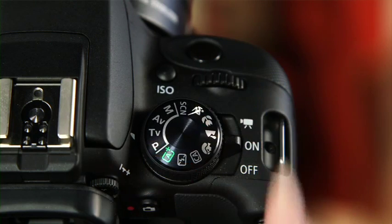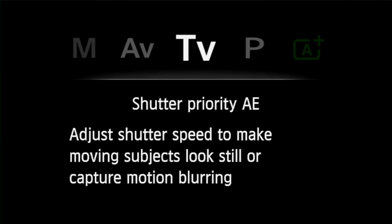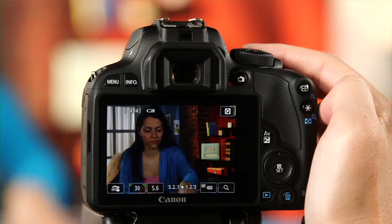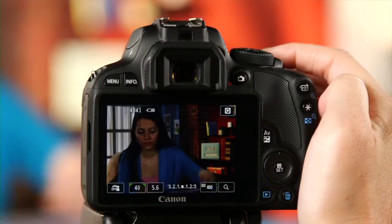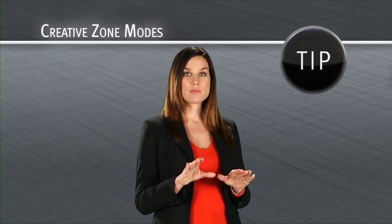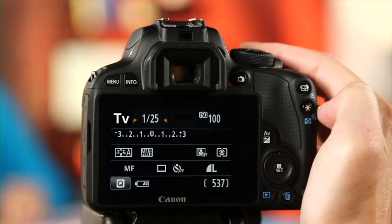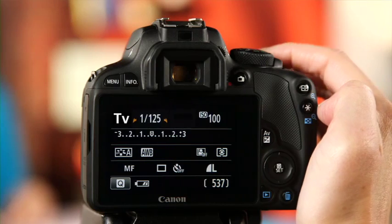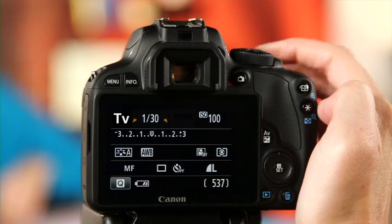The TV setting, or shutter priority AE mode, allows you to easily freeze action or create motion blur. Turn the dial to the right for a fast shutter speed or to the left for a slow shutter speed — the aperture will be set automatically. If the aperture display blinks, turn the dial until it stops blinking. To freeze fast-moving subjects, use a fast shutter speed such as 1/2000th of a second. To blur something like running water, use a slow shutter speed up to a maximum of 1/30th. Using a tripod is recommended for the steadiest images.